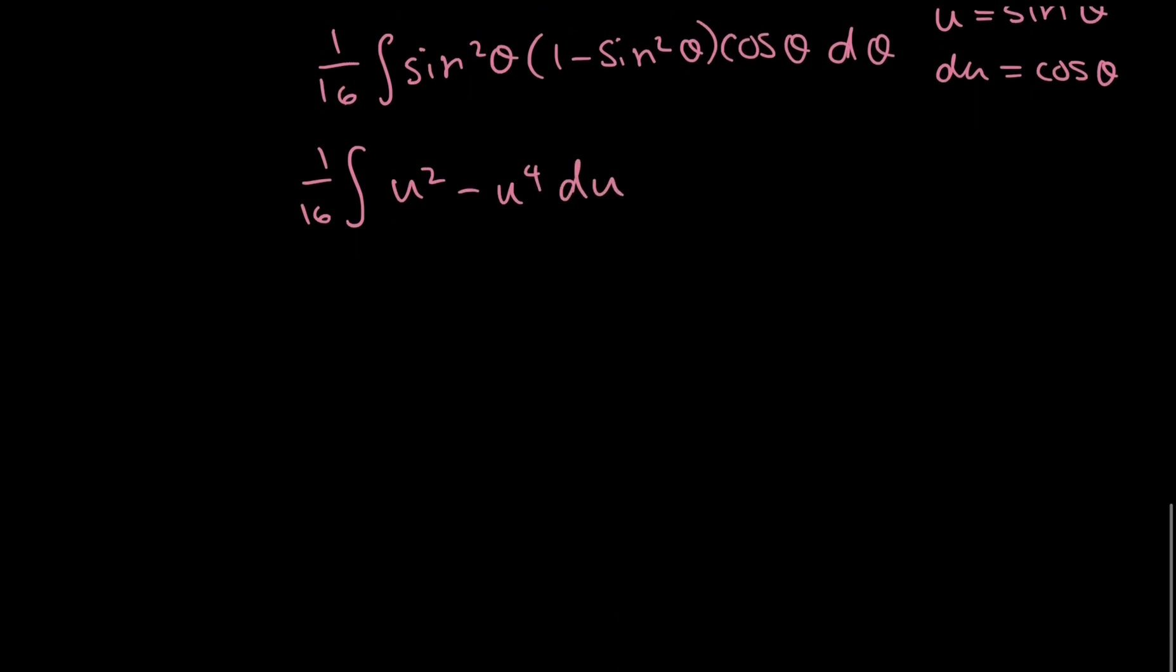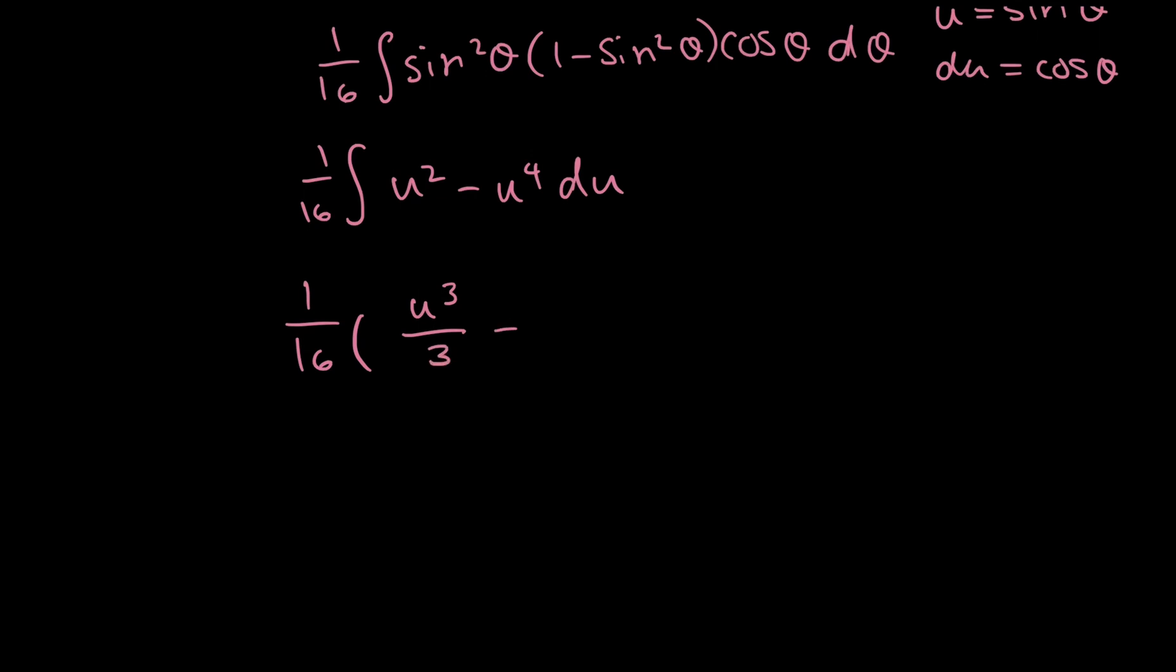And now this is very easy to integrate because this is just quick power rules. So again, keeping my constant out, I'm going to get u to the power of 3 over 3 minus u to the power of 5 over 5.